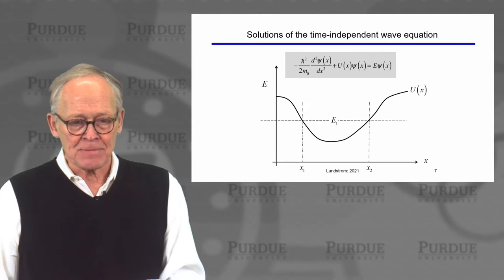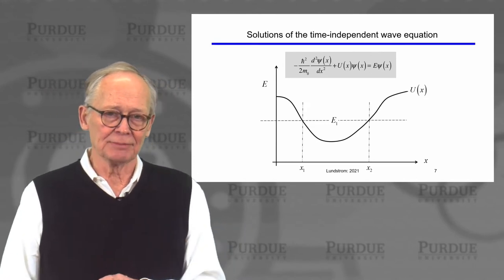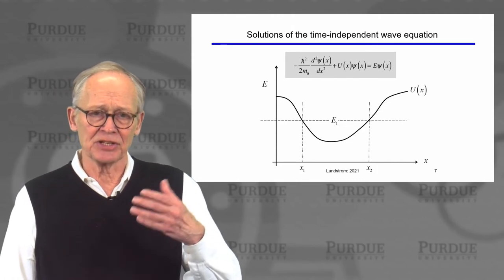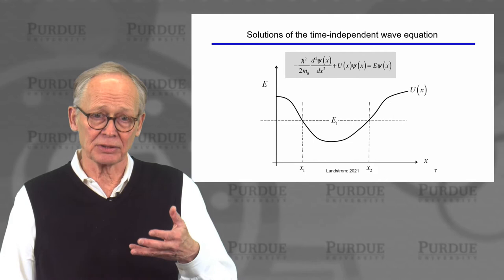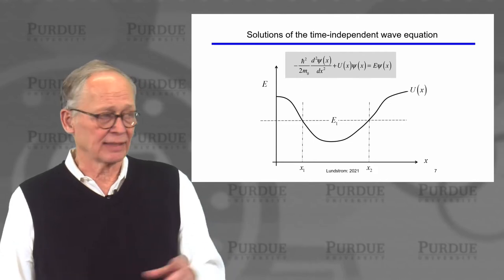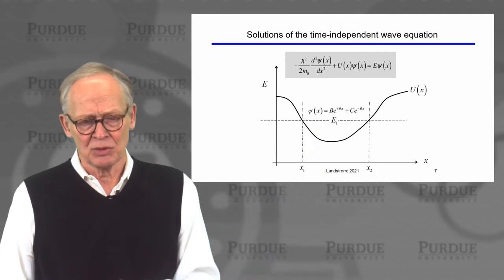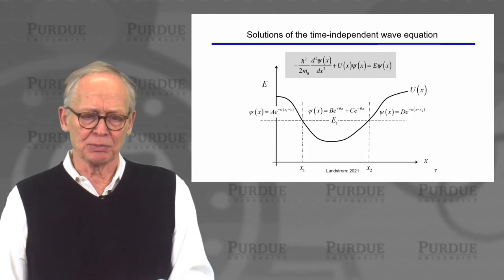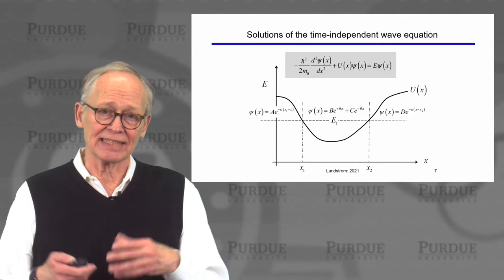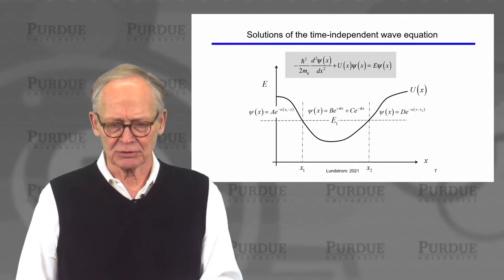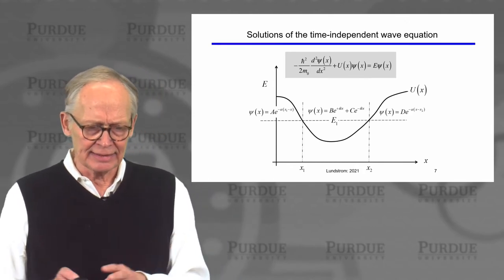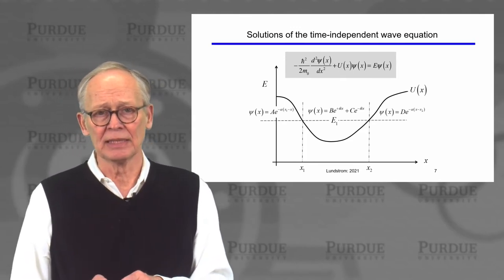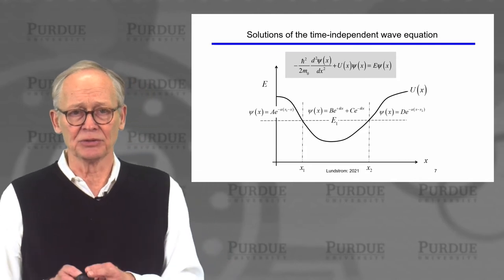We spent some time discussing solutions to the wave equation. It depends on whether the energy of the particles is above or below the constant potential U. When it's above, we get oscillating wave solutions. When it's below, we get exponentially increasing or decreasing solutions. Given a potential profile and applying the right boundary conditions on the wave equation, we can deduce these solutions.